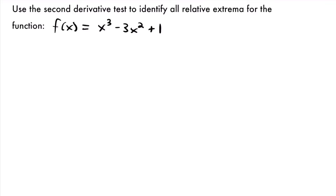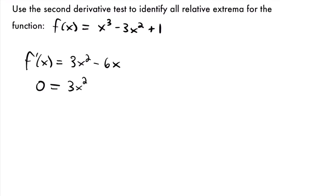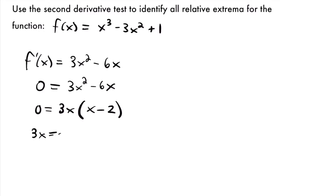Let's find our first derivative and find those critical values. f'(x) is going to be equal to 3x² — that's the derivative of x³ using the power rule — minus 6x, because negative 3 times 2 is negative 6, and the derivative of 1 is just zero. Now let's set our first derivative equal to zero and solve for x. We have 3x² - 6x, and there's a common factor of 3x that we can pull out, giving us 0 = 3x(x - 2). Setting each quantity equal to zero gives us x = 0 and x = 2, and those are our two critical values.